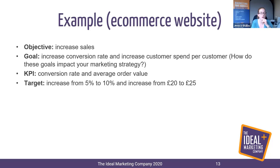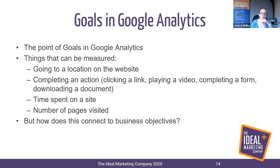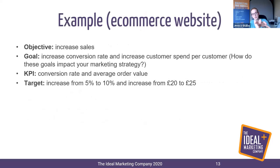Your key performance indicators are the measurements in Google Analytics: conversion rate and average order value. Then set a target — draw a line in the sand, based on the previous year or just an ambitious goal. For example, increase conversion rate from 5% to 10%, and increase average order value from £20 to £25. If you know how many customers you had last month or last year, you know the business impact. You can see how this wraps up within your sales plan as well.